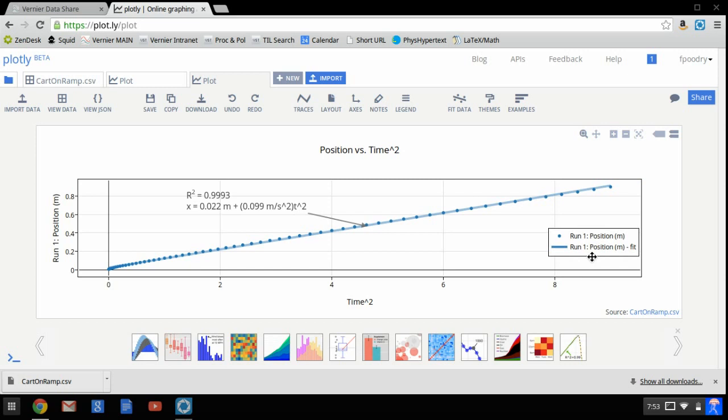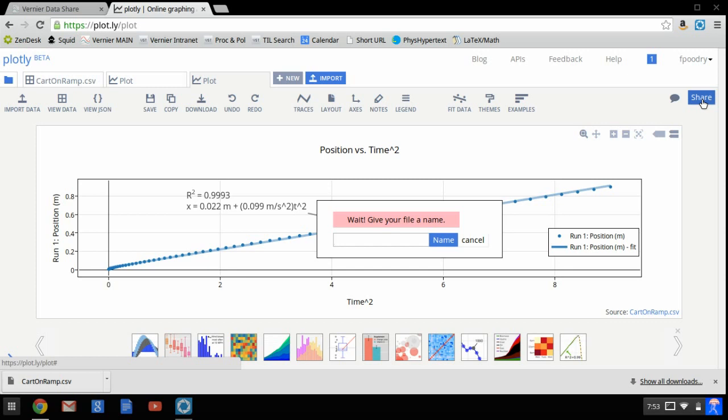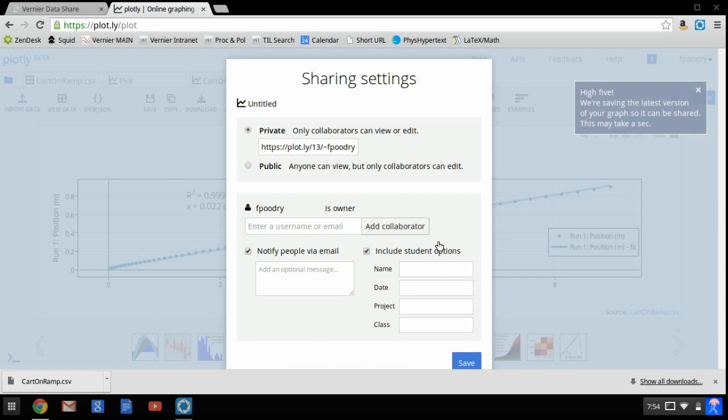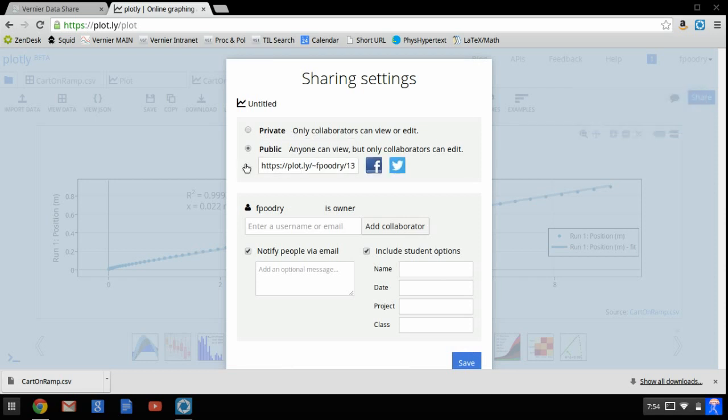And then I'm going to want to save this, and if I'm a student, share this with my teacher. So I'm going to share. Oh, I need to name it. So once again, I'm going to call it cart on ramp. And then it gives me some options for sharing this. I'm going to make this one public so that you'll be able to see it.